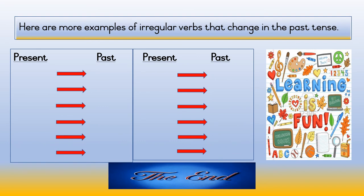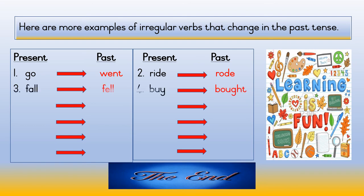Here are more examples of irregular verbs that change in the past tense. Number one — present tense: go; past tense: went. Number two — present tense: ride; past tense: rode. Number three — present tense: fall; past tense: fell.